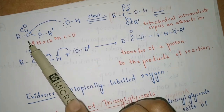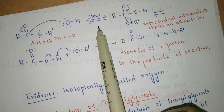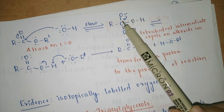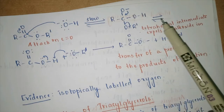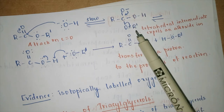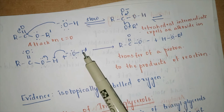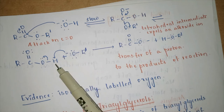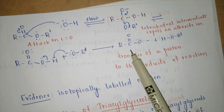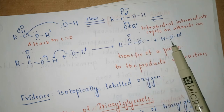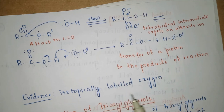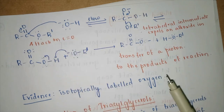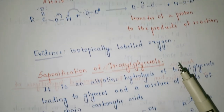To summarize the mechanism: nucleophile attacks the carbonyl carbon (slow rate-determining step) → tetrahedral intermediate → expulsion of alkoxide ion RO⁻ → alkoxide abstracts the proton → carboxylate anion and alcohol are formed. Evidence for this mechanism comes from isotopically labeled oxygen studies, which confirm where cleavage takes place.